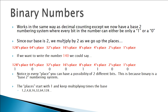So if I took the decimal number 140 and wanted to convert it to binary, I would have a 1 in the 128s place, a 0 in the 64s place, 0 in the 32s, 0 in the 16s, a 1 in the 8s place, a 1 in the 4s place, 0 in the 2s place, and a 1 in the 1s place. So 128 plus 8 gives me 136, plus 4 gives me 140. In every place we can have just two digits because it's base 2, and you can really do that with any base numbering system.